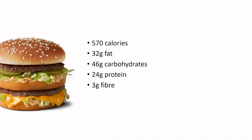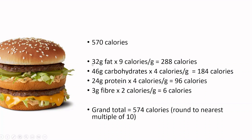Applying the Atwater calculation to the Big Mac: 32 g fat × 9 = 288 calories; 46 g carbohydrates × 4 = 184 calories; 24 g protein × 4 = 96 calories; plus approximately 6 from fiber. Grand total: 574 calories. In Canada, the rounding rule states that for products with more than 50 calories, we round to the nearest multiple of 10 — giving us 570 calories on the label. The Atwater factors work extremely well here.